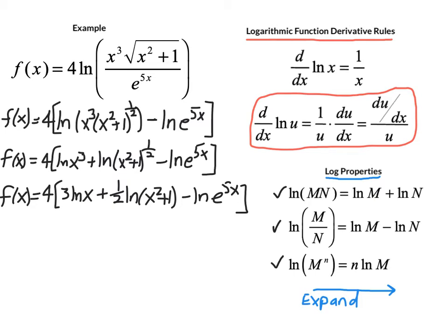We're going to do two more things here before we take the derivative. I'm going to distribute the factor 4 through just to clean things up. And you may have spotted it earlier but the natural log of e to the 5x is an example of the inverse property. The natural log of e to the u is u. So this term is going to be negative 5x. When I distribute 4 through my function and apply that inverse property I end up with 12 times the natural log of x plus 2 times the natural log of x squared plus 1 minus 20 times x.